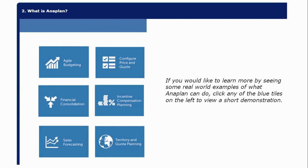So basically, Anaplan is a cloud-based planning tool. It's like Excel on steroids — a very powerful Excel, that way you can say.